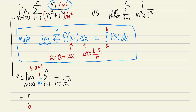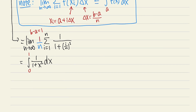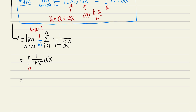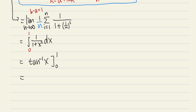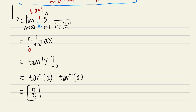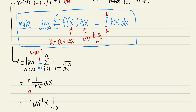This is just the integral from 0 to 1 of 1/(1 + x²) dx. The integral of 1/(1 + x²) is inverse tangent of x. Plugging in the bounds: arctan(1) minus arctan(0). Arctan(1) is π/4 and arctan(0) is 0, so the answer is π/4.